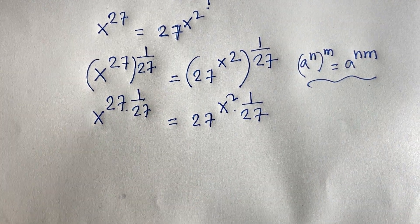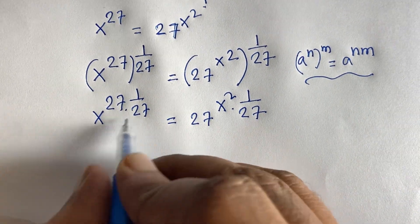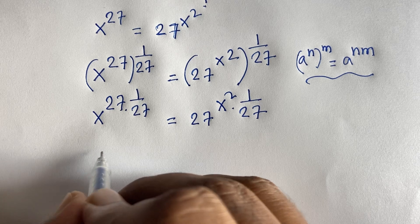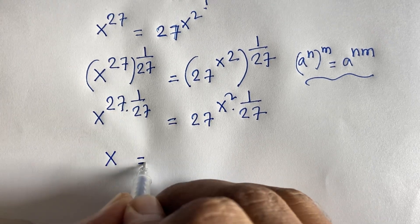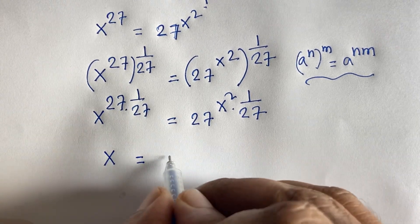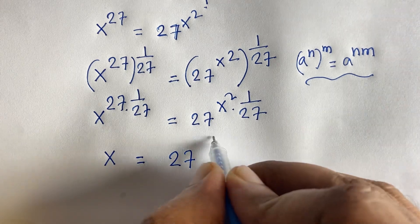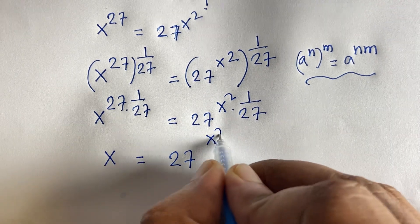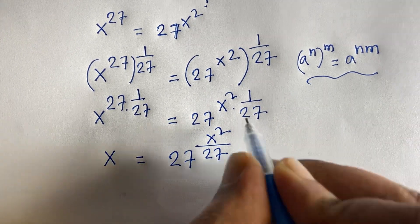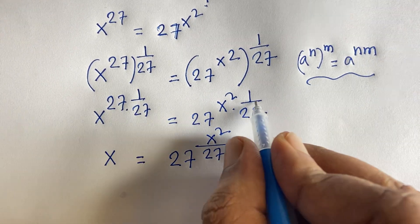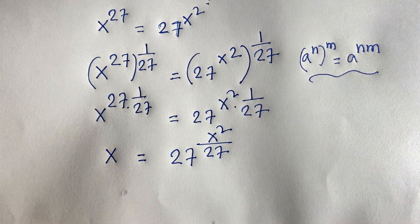In this equation, here is 27 and 27 is cancelled. We will find out x is equal to 27 to the power x squared over 27.